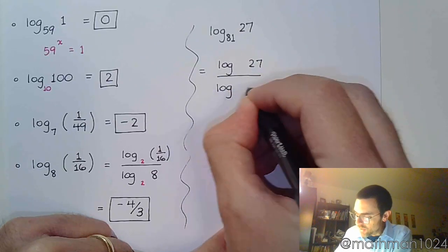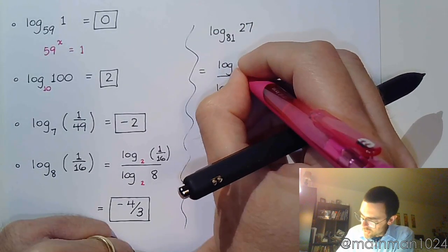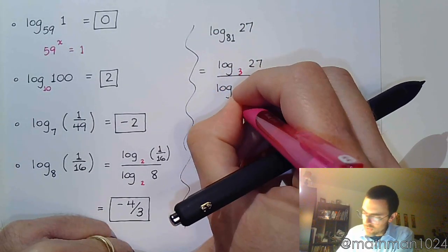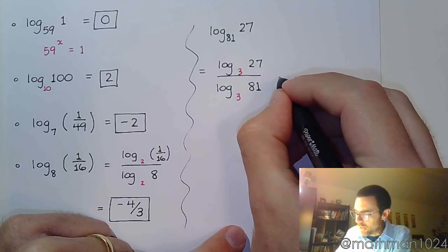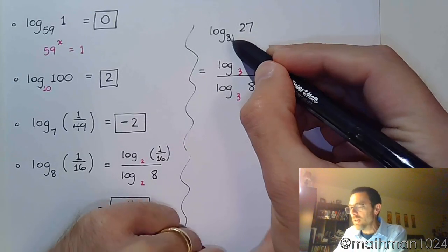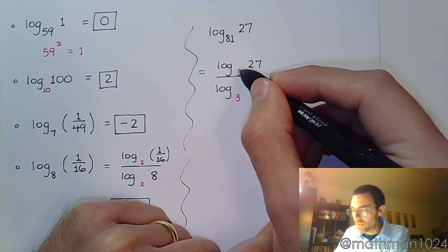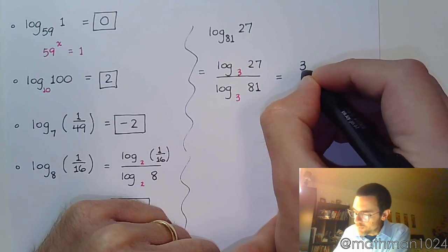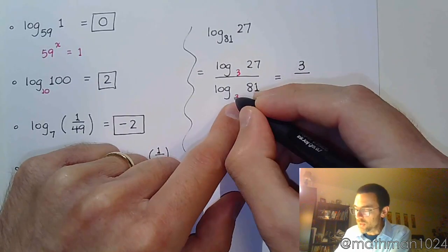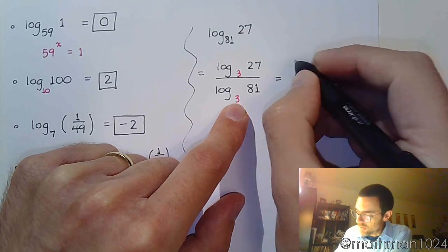These guys are both based off of 3. So, if I do the change of base theorem, and I say this is a base of 3 for each of these, then it becomes a very simple problem, right? Because, in and of itself, it's hard to say what's the power of 81 that gives you 27. But, if I say it like this, what's the power of 3 that gives you 27? That's 3. What's the power of 3 that gives you 81? Look on your list of powers, and the answer is 4.